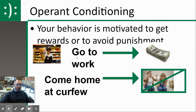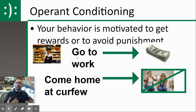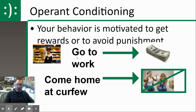How do we learn those secondary drives? One of the ways is through operant conditioning — your behavior is motivated to get rewards or to avoid punishment. You might have a secondary drive that wants you to be eventually secure and wealthy and successful, so you go work at Dunkin' Donuts to get money to pay for college, so you can get a career. Operant conditioning might also have you come home at curfew to avoid problems with your parents, fulfilling a secondary drive of having a safe, calm place to live.